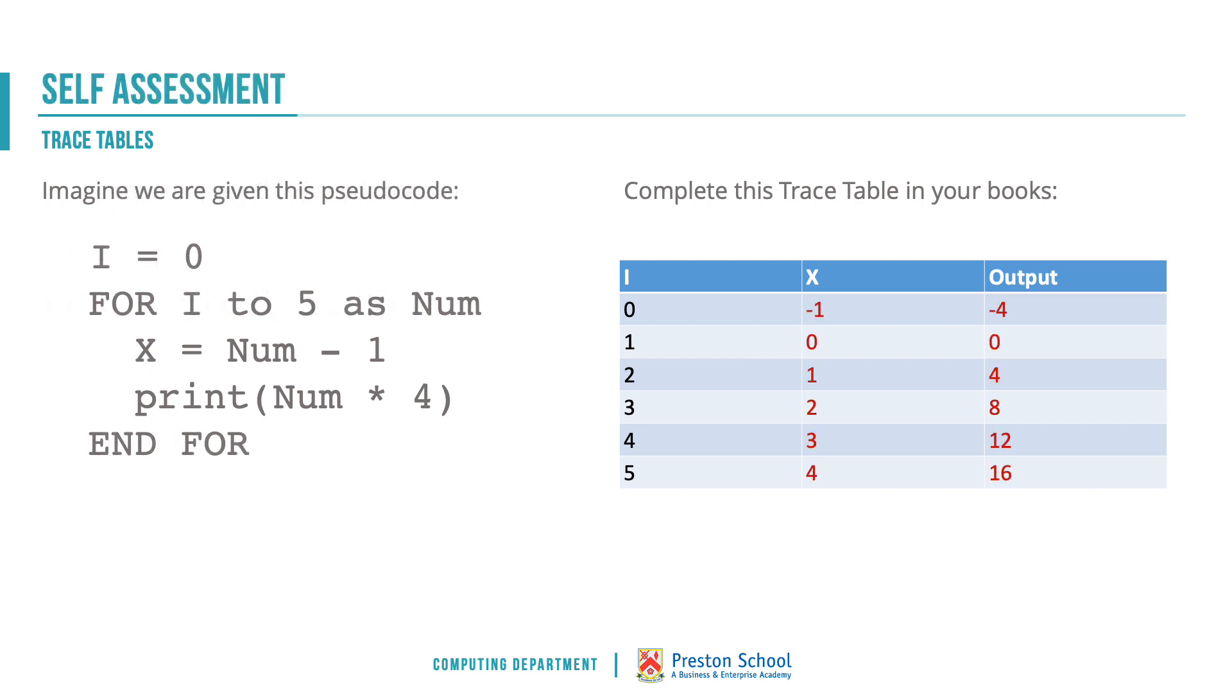Here are your answers for this one. X is going to be minus 1 the first time round going up to 4 at the end and we're then multiplying that by 4. So our output, the only print we're given, that's the only output from this program is our numeric value, minus 4 to 16 going down the right-hand column.